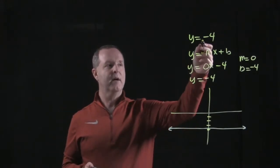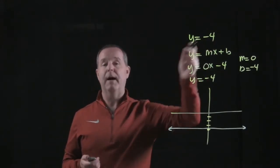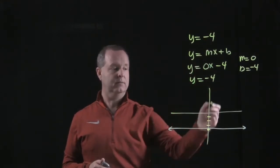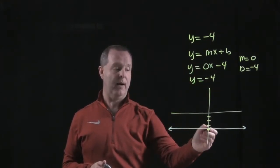Another way to look at that, too, is for every value of x, my y is negative 4. So we've already said that at zero, x value is zero, my y is negative 4.